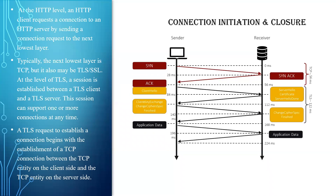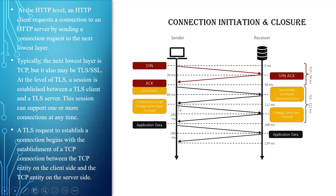For connection initiation in HTTPS, the agent acting as an HTTP client also acts as a TLS client. The client — the sender — initiates a connection to the server across the appropriate port, say port 80, and then sends a TLS client hello message. Synchronization first starts with the client hello message and begins the TLS handshake. Once the TLS handshake is finished, the client may then initiate the first HTTP request. All HTTP data sent as TLS application data is completely encrypted.